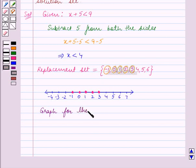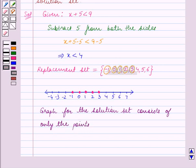So this is the graph for the solution set and the graph for the solution set consists of only the points -1, 0, 1, 2, 3.